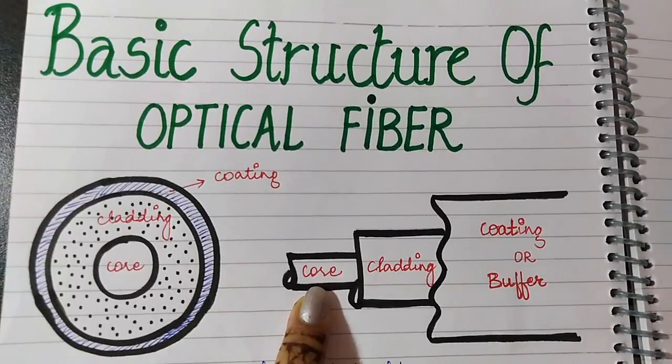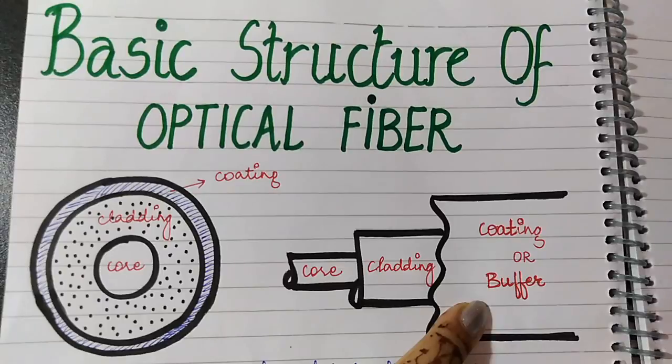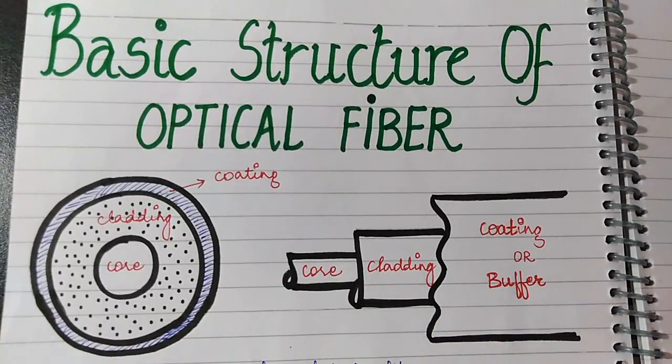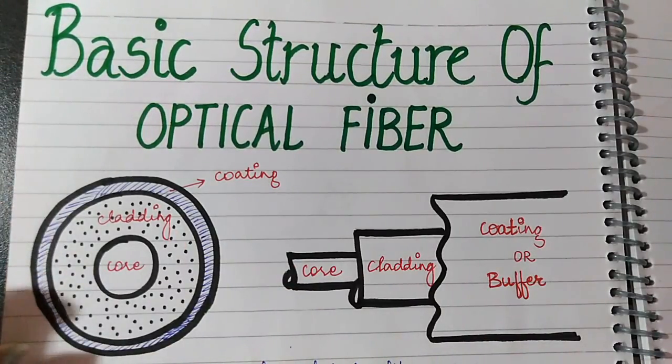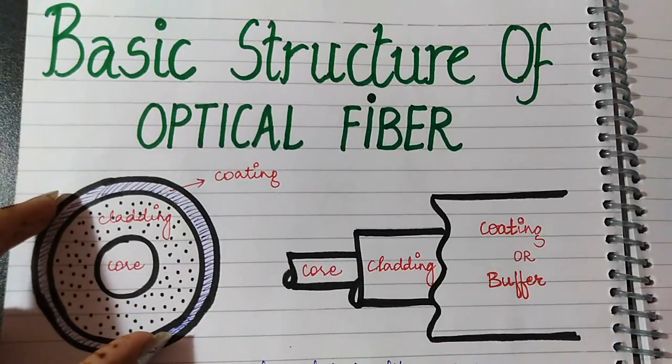The innermost is the core, then there is a cladding, and then there is the outer covering or coating, or we can say it is a buffer. This is the side view while this is the cross-sectional view and you can see that the innermost is the core, then there is the cladding, and the outermost is the coating part.